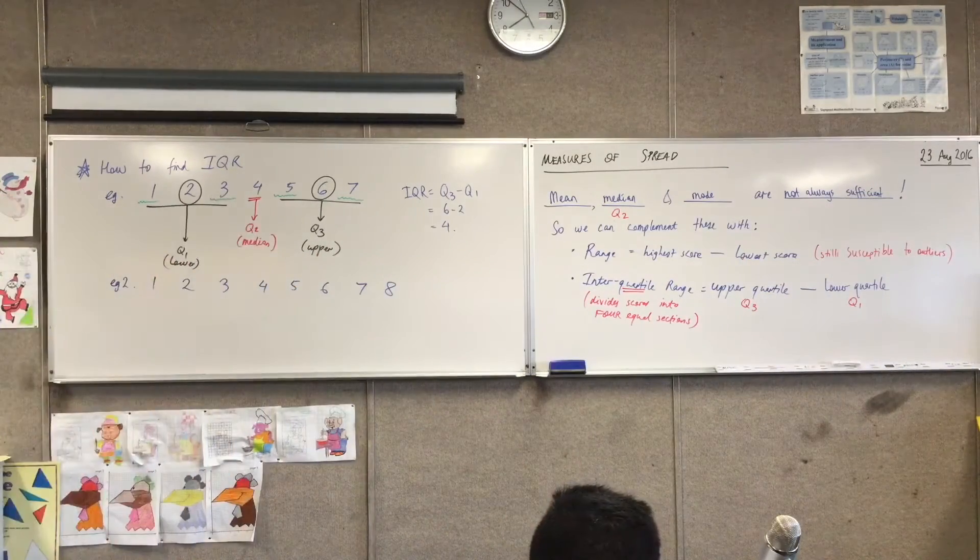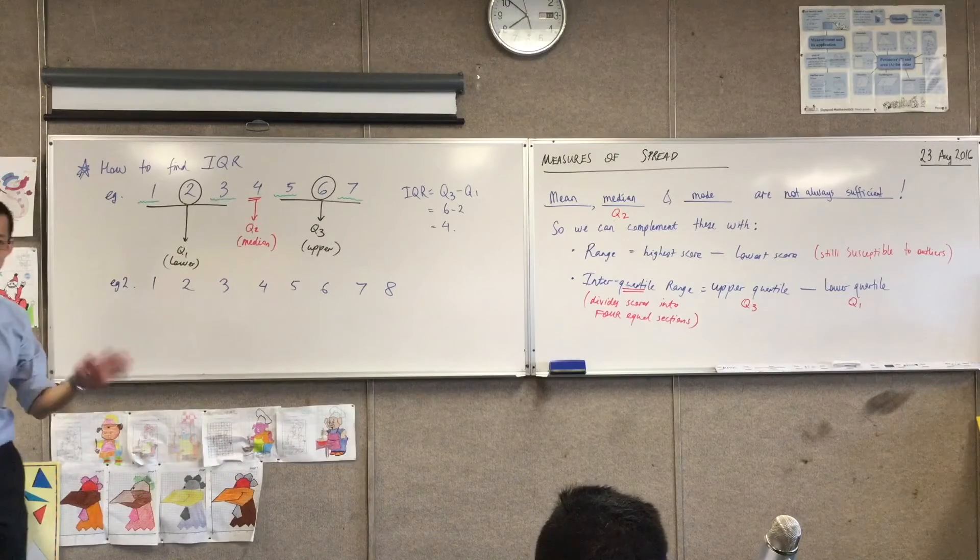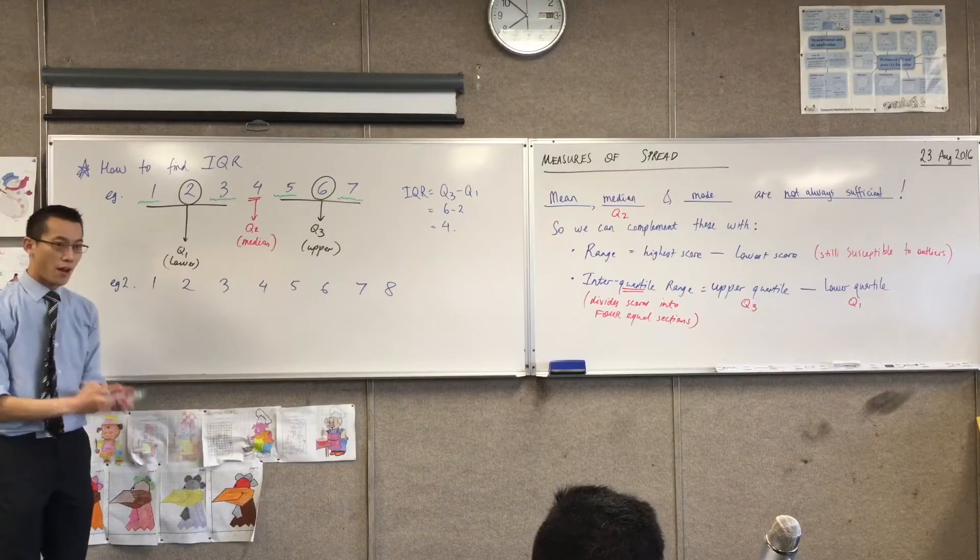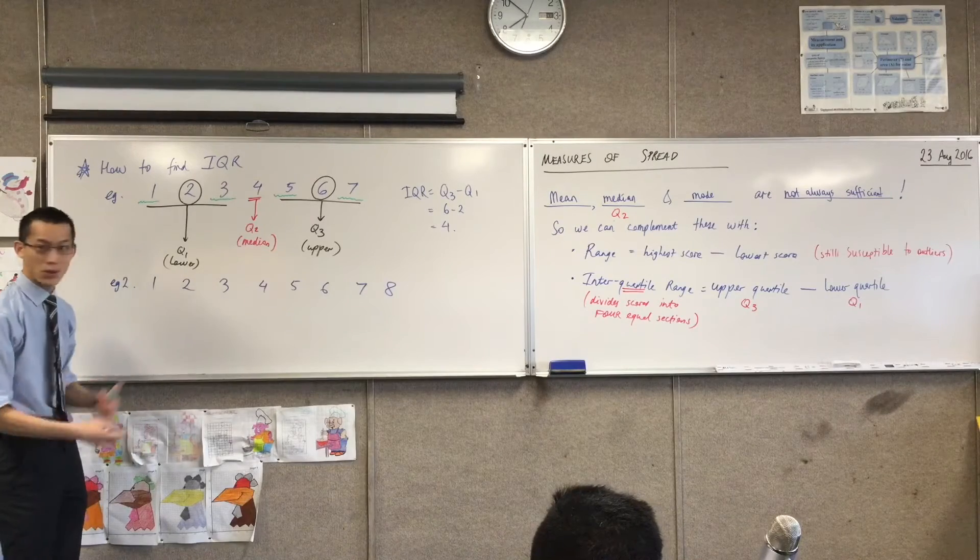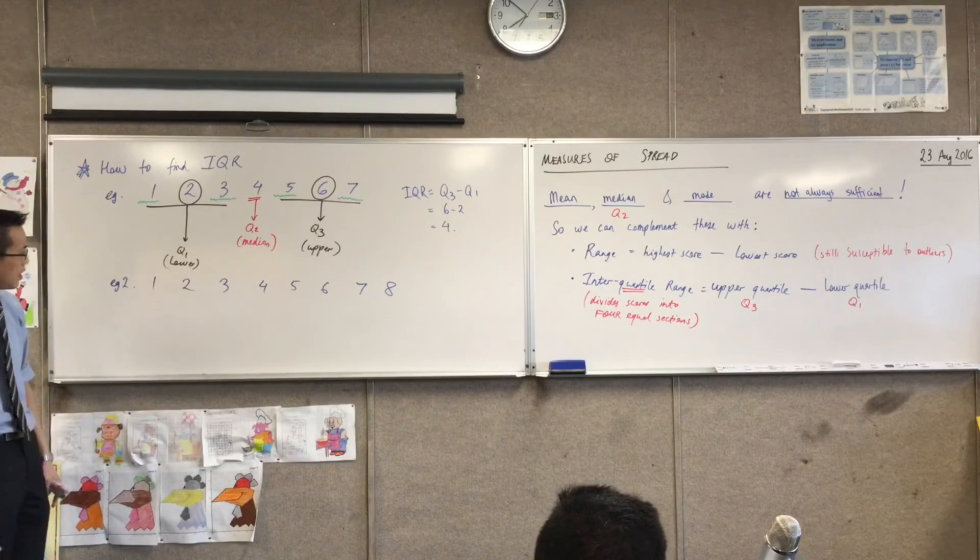All right, let's have a look at this one. Again, let's go through this and try and work out each of the individual pieces. Firstly, where do we start? Which quartile do we find first? Q2, because the middle one's always the easiest to spot. So you have a look.